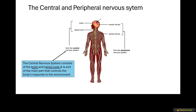The central nervous system — the brain and spinal cord — is the main part that controls the body's response to the environment; you cannot live without your brain. The peripheral nervous system refers to all the cranial and spinal nerves, shown as the blue parts in the diagram. The CNS is abbreviated as CNS and the peripheral nervous system as PNS.